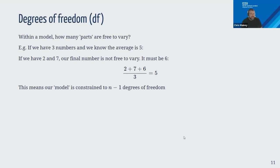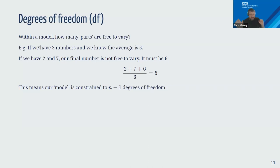I need to introduce degrees of freedom, which you may have seen reported in regression output. It describes how much of your model is free to vary — if you fix certain bits, how much is left able to vary. Imagine a model with three numbers where the output must equal five: once you know two numbers, the third is no longer free to vary because it must make the average five.